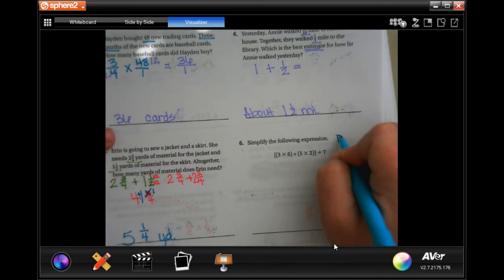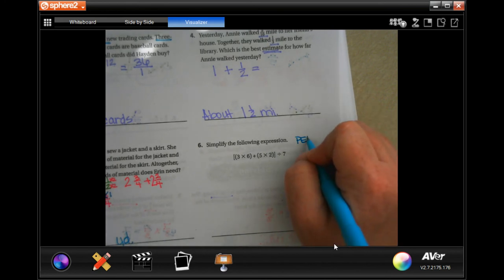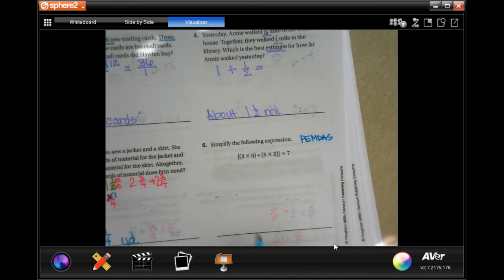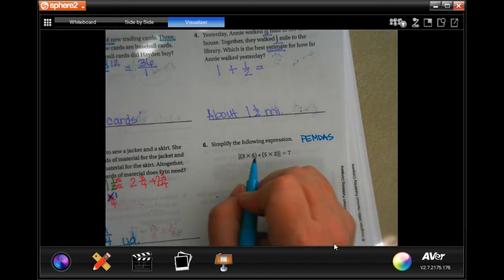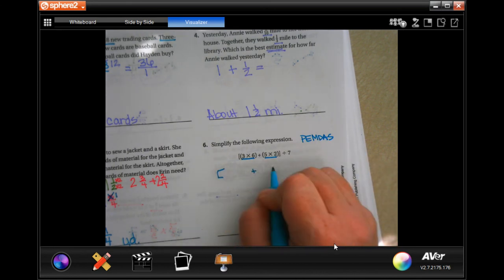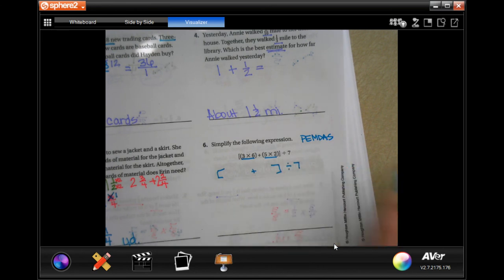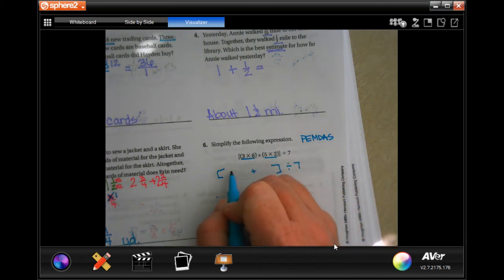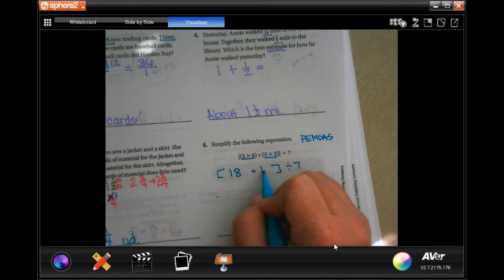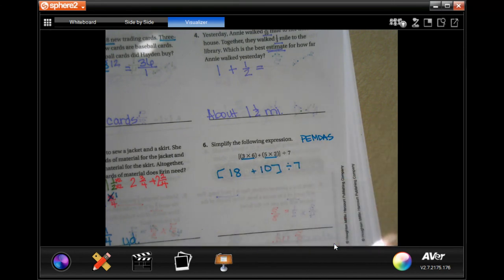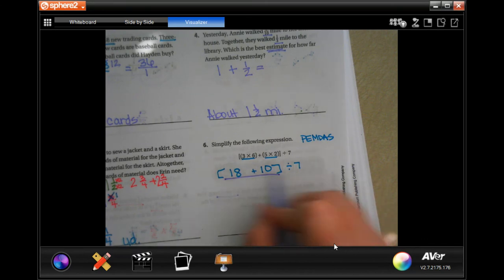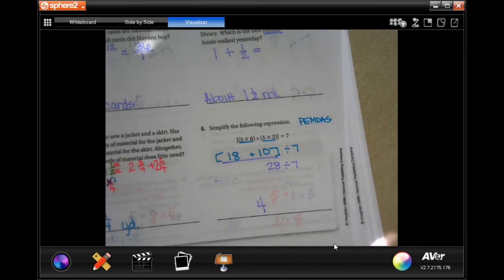Simplify the following expression. Parentheses. We do have those. So, we're going to do the inside parentheses first. So, I'm still going to rewrite a plus sign in the middle and divided by 7, because those aren't going to disappear just because I do this. So, 3 times 6 is 18, 5 times 2 is 10. I still have parentheses. So, I'm still going to do divide by 7 at the end. 18 plus 10 is 28. And 28 divided by 7 is 4.